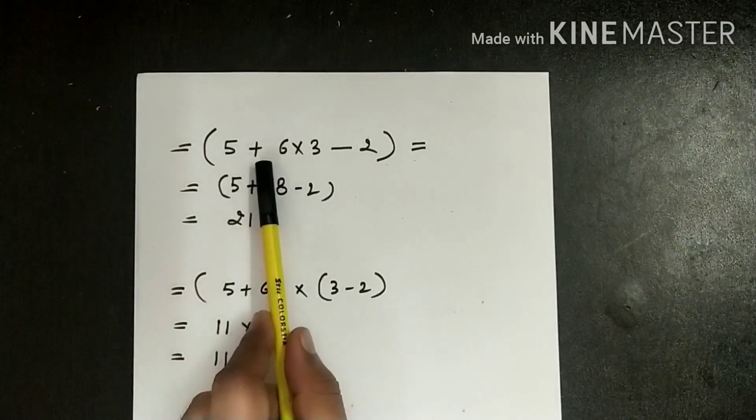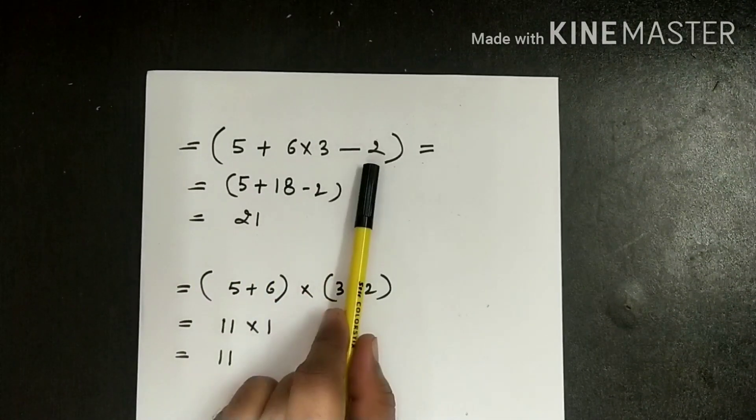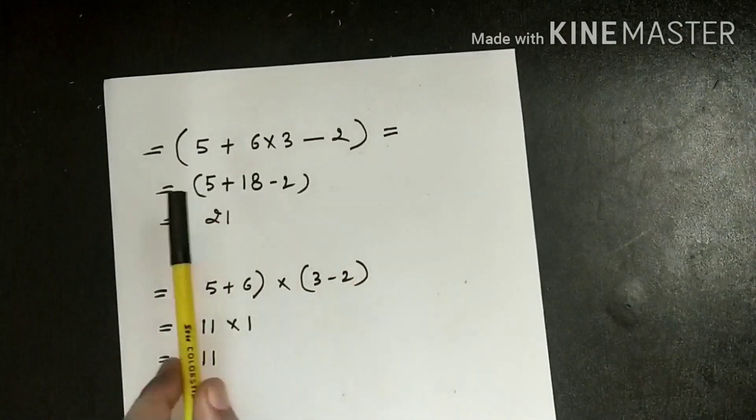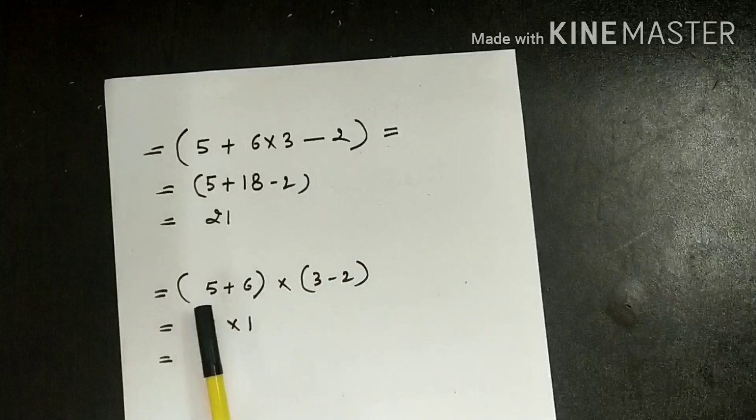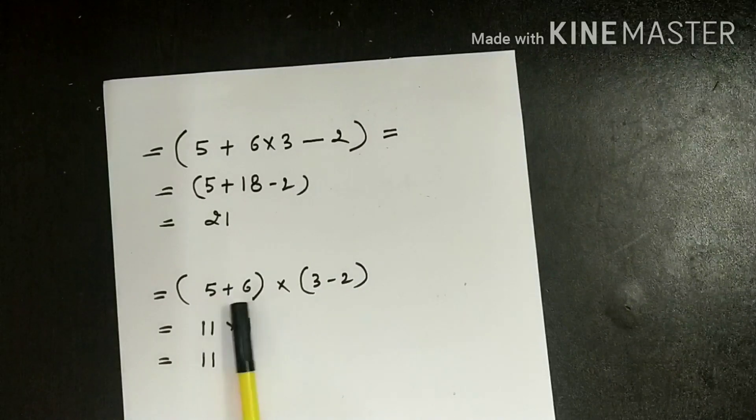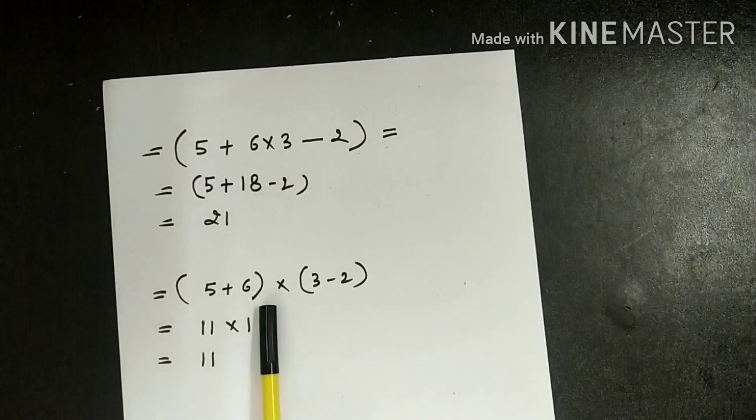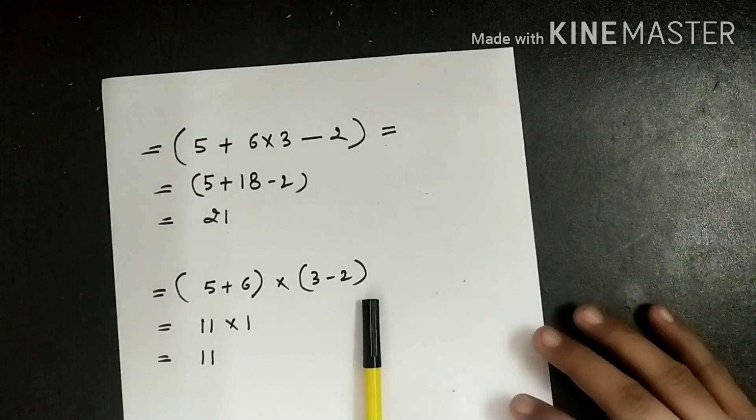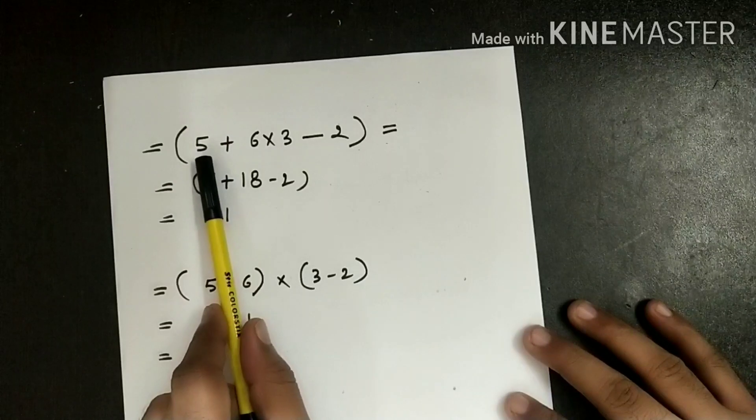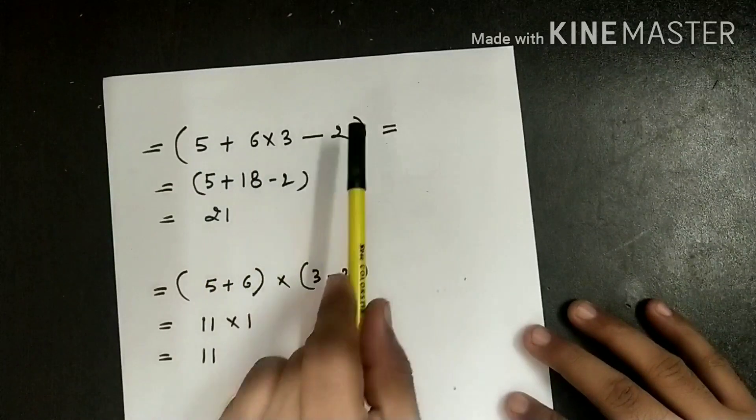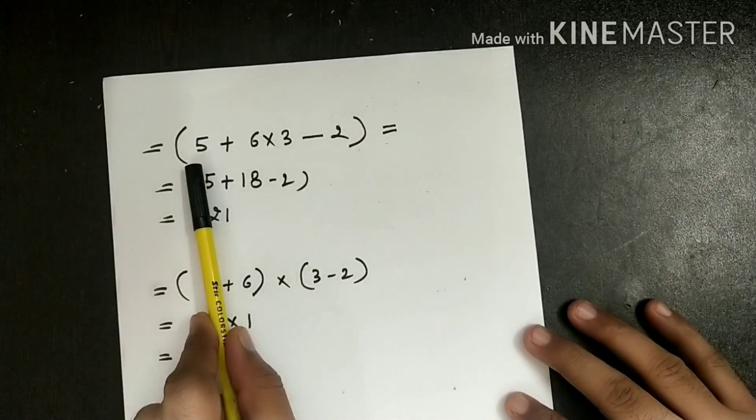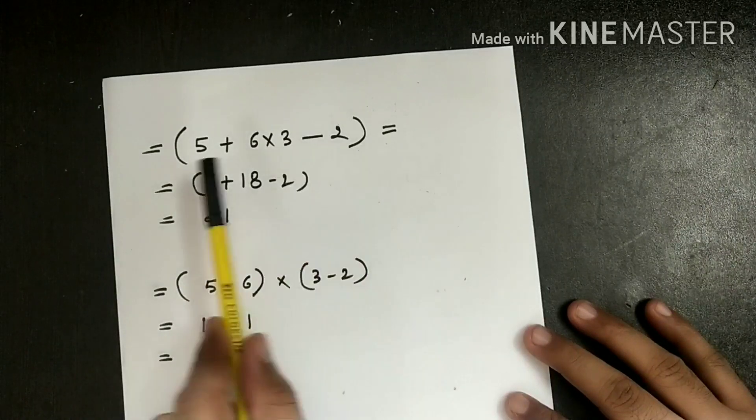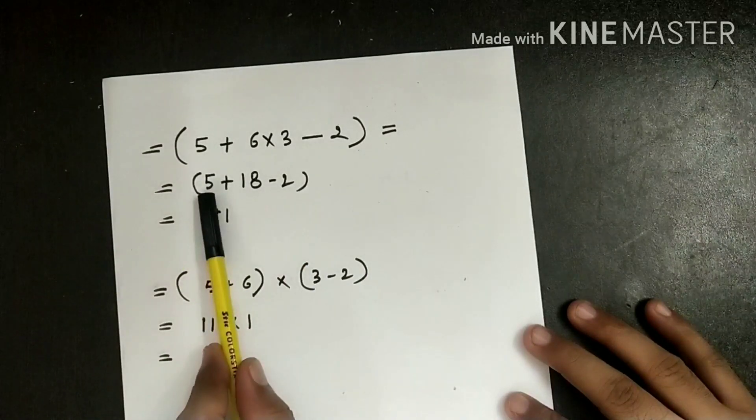number 5 plus 6 into 3 minus 2 in a bracket, and we have also taken same numbers with 5 plus 6 in one bracket into 3 minus 2 in one bracket. If you see here, we have bracket outside, so how does it work? It works like 5 plus